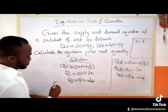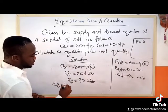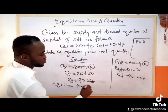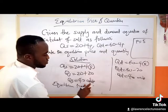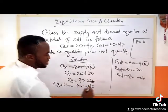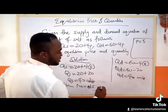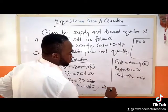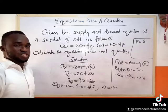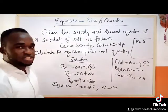So the equilibrium price equals 5 naira, and the equilibrium quantity equals 40 units. That is how to solve questions like this.